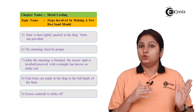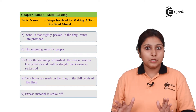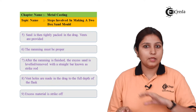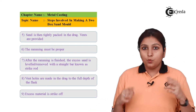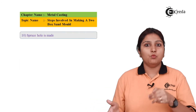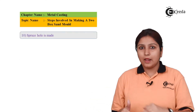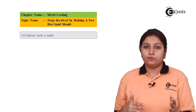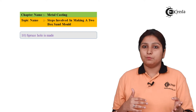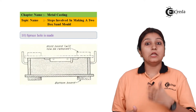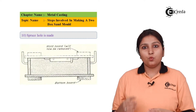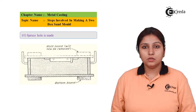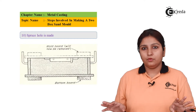After venting, you use your strike-off bar. As we have studied in the tools section, the strike-off bar is used to remove the excess material. So as soon as your ramming is done — putting the sand, ramming it — you give vents, which are small holes, and then the excess material is struck off. Venting is done till the base so that when excess gas reaches the base it comes out, and excess material is struck off.